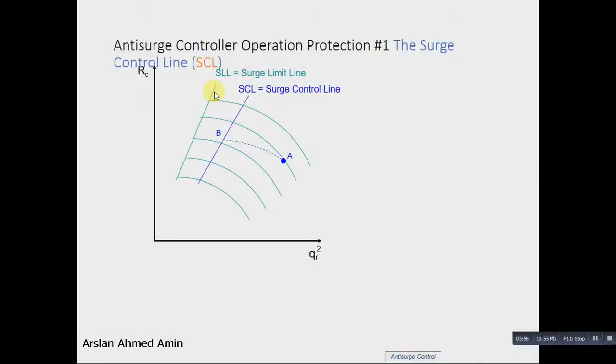Defined for the compressor map, we normally use a 10% margin between the surge limit line, which is the actual point of surge, and the surge control line. Normally there is a 10% margin.